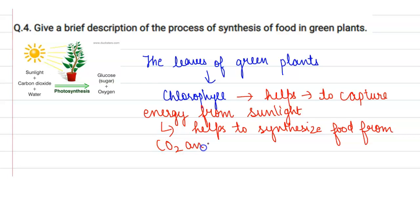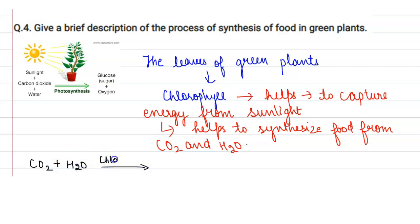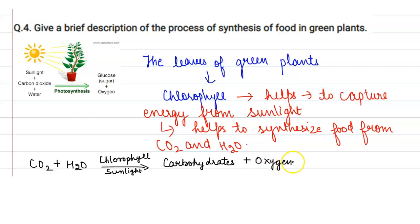Green plants use carbon dioxide and water in the presence of chlorophyll and sunlight to form carbohydrates and oxygen. I hope this is clear, thank you.